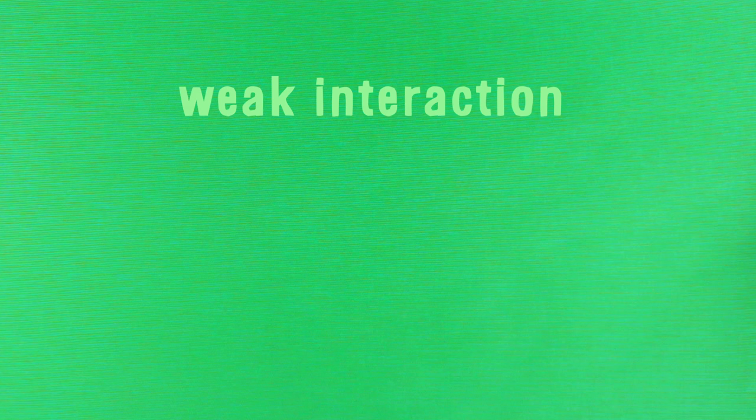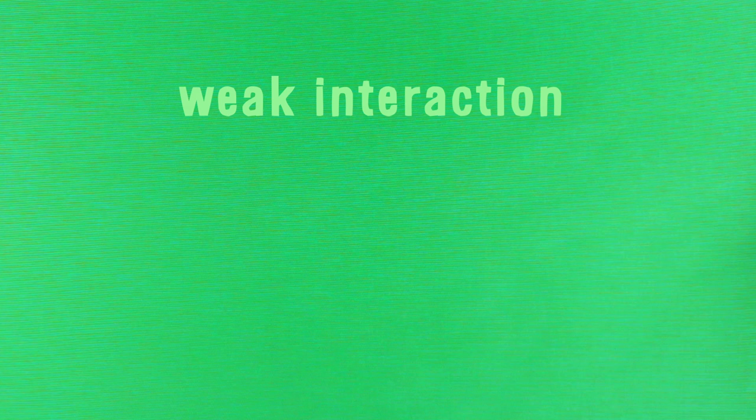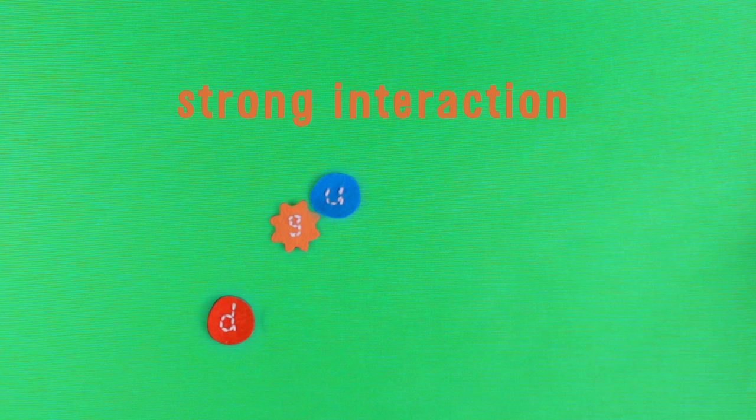As you'd probably expect, there is also a strong interaction. Quarks and gluons in atomic nuclei take part in that one. And then there's the electromagnetic interaction, which these two electrons take part in. It means that they eject or absorb a photon.